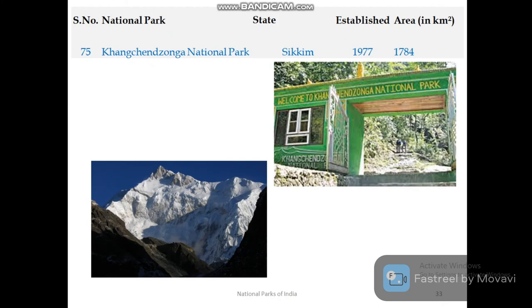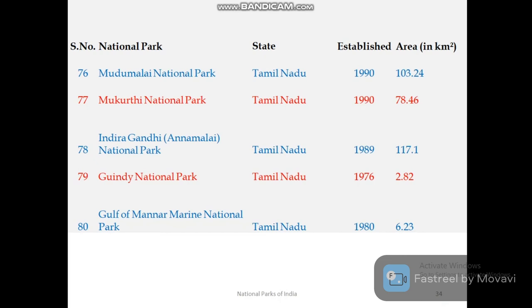Sikkim has only one national park — Khangchendzonga National Park. It is a UNESCO World Heritage Site and holds the unique distinction of being the only national park in India that falls under the UNESCO mixed category, which includes cultural sites, natural sites, and mixed sites.